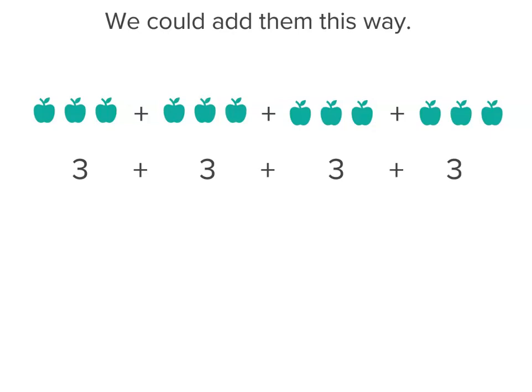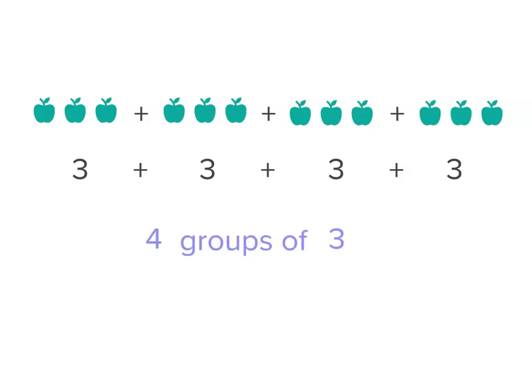But what if I had a lot of groups of three? I need another way. So I've got four groups of three, and even without the apples, I can still think of it as four groups of three. I can write it as four multiplied by three, because groups of means multiplied. So my apples could be written as four multiplied by three, or four times three.